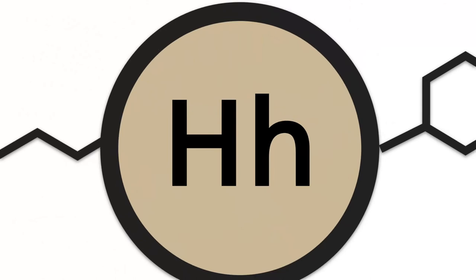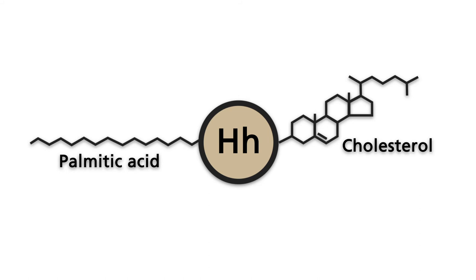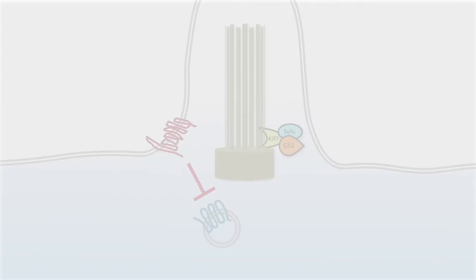Amniotic vertebrates harbor three hedgehog homologues. In the following, these homologues will be summarized as Hedgehog, abbreviated HH. Secreted hedgehog is covalently modified by cholesterol and palmitic acid.